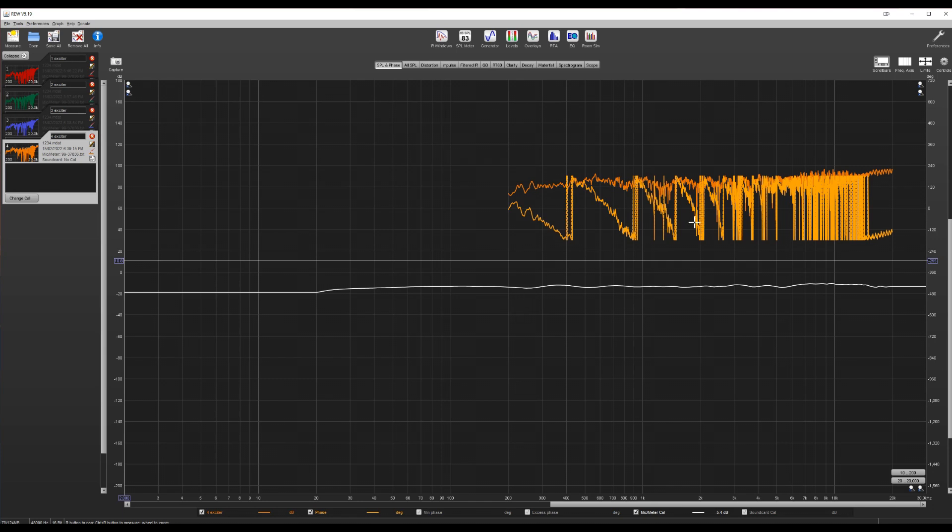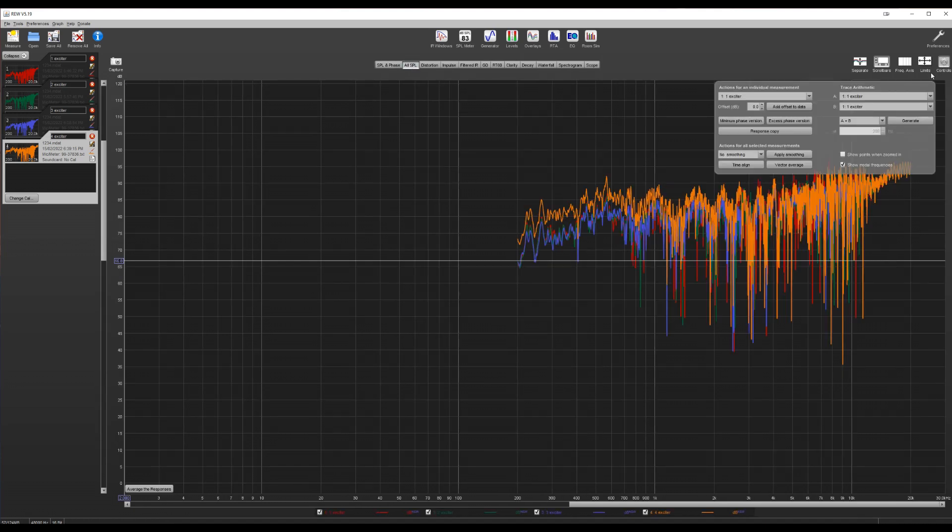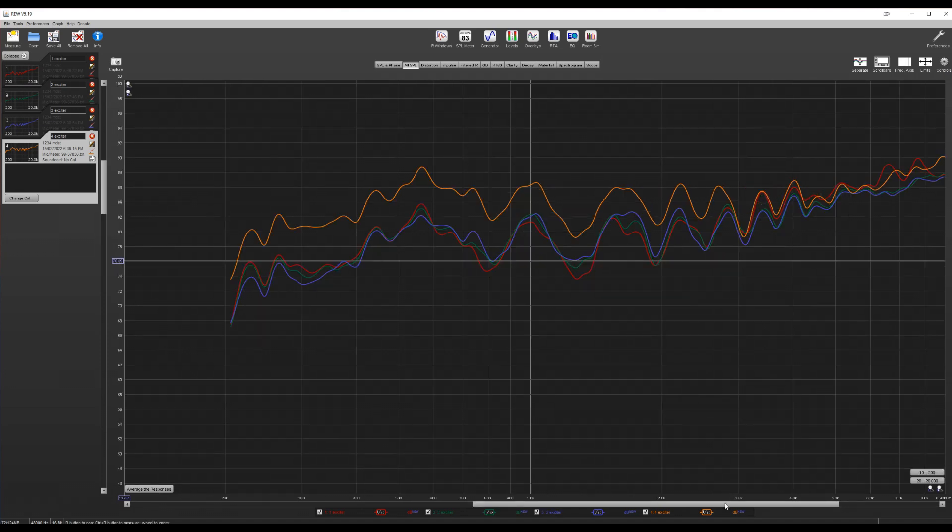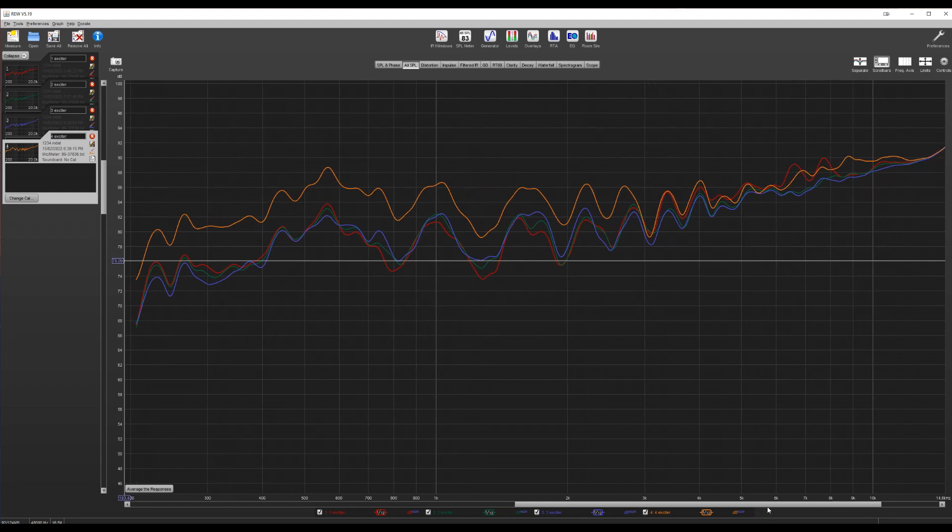So a couple of things are obvious right off the bat. Firstly, one configuration looks a lot stronger than the other three, particularly in the lower frequencies. Secondly, they're all exactly the same shape. That is, all four measurements peak and dip in the same frequencies at basically the same amplitude. The one with the strong bass here is the four exciter measurement with the series parallel wiring. It's actually a good 4 to 5 dB higher than any other measurement, up to about 1 kHz, after which the gap slowly closes until around 4 kHz, from which point they're all basically the same.